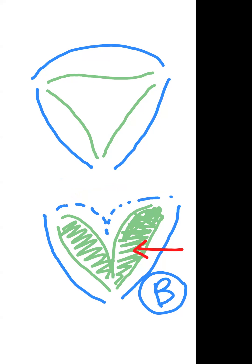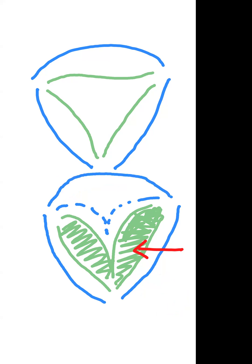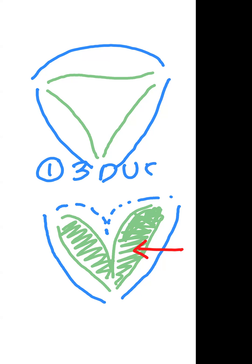Now, there are variants in this, like bicorporeal septate, etc., which we will discuss at some other time. But for now, suffice to say that we require an investigation which tells us what is the external fundal contour of the uterus. And this is possible only in two investigations. One of these is a 3D USG, and the other correct investigation to diagnose this is an MRI. Purely on the basis of HSG alone, it is not possible to find out what is the external contour.